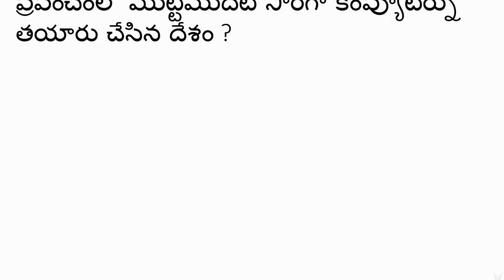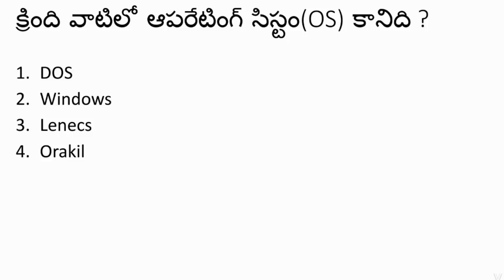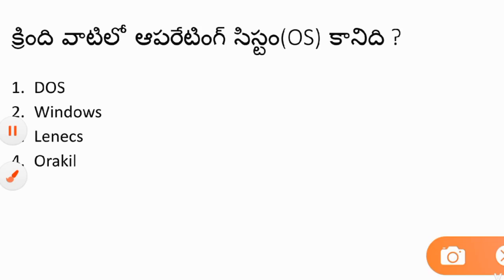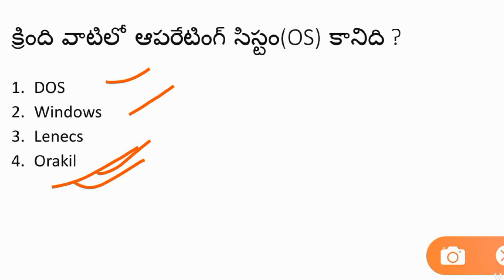The second question asks which software should be placed in the first category. The options are: DOS, Windows, Linux, and Oracle. DOS, Windows, and Linux are operating systems. Oracle, Java, C++, and C language are programming languages, not operating systems.